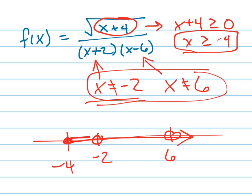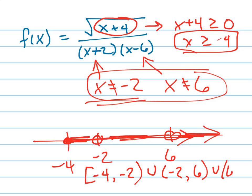So how do I write this? You do a union. How do I write that? I say from negative 4, inclusive, bracket, to negative 2, not inclusive, union, from negative 2, not inclusive, to positive 6, not inclusive, union, from 6 to positive infinity. I forgot the last part. That's how you write it. Awesome.